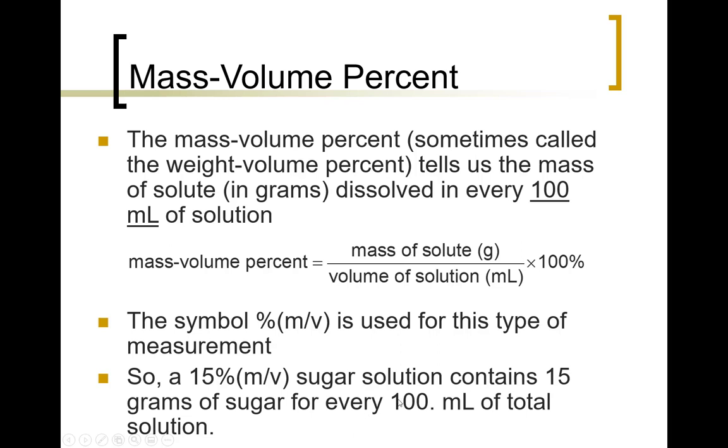What if there was 300 milliliters of solution? Well, if there's three times the volume, then that'd be three times the number of grams. There would be 45 grams of sugar for every 300 milliliters. In other words, that ratio needs to essentially be the same. 15 over 100 is 15 percent, .15.